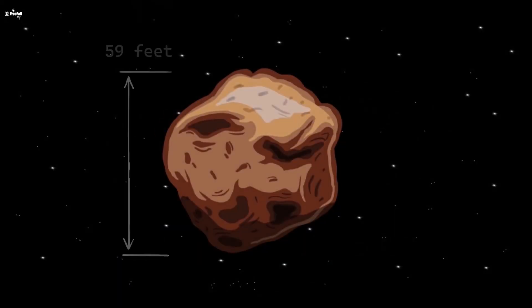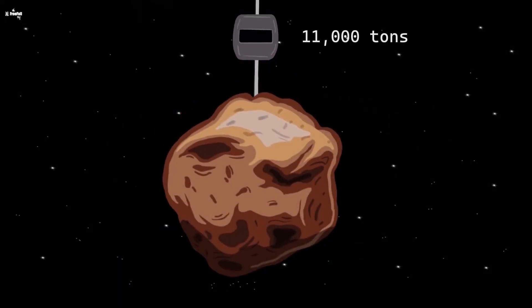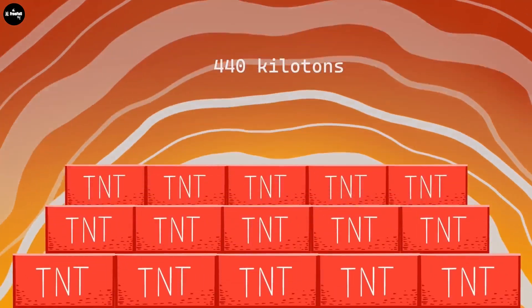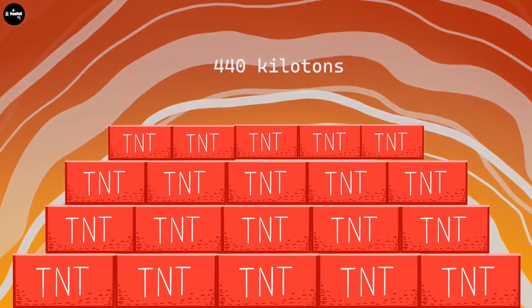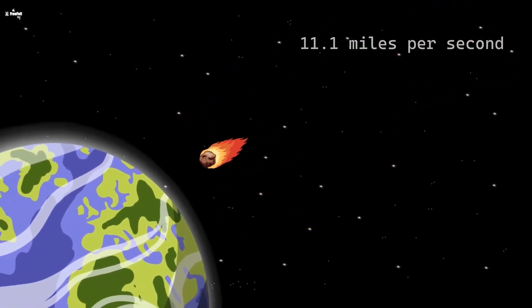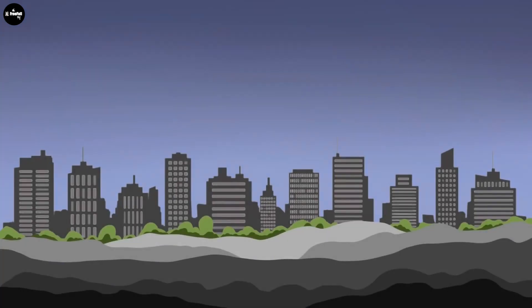Meteorites are named after the place where they are found, usually a city, town, or somewhere in terms of geography. In the case of multiple meteorites found in the same place, they add characters or numbers after the name.